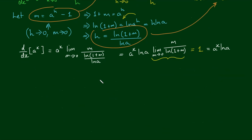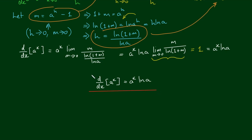So there you have it — we've just proved that the derivative of any exponential function a to the power of x, where a is a positive real number and x is the exponent, is equal to a to the power of x times the natural log of a. Let's box that answer and keep this in your table of derivatives.